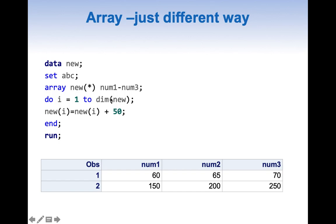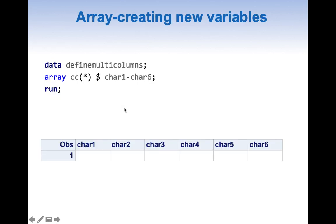The DIM function on an array name returns the maximum element count — in our case it is 3. Arrays can also create new variables: if variables don't already exist, a statement like this creates six new variables. Adding a dollar symbol means the variables being created are character variables.